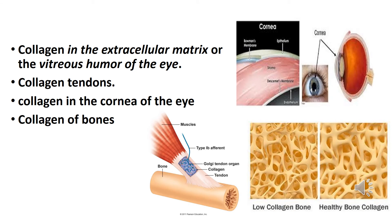Although collagen molecules are found throughout the body, their types and organization are dictated by the structural role collagen plays in a particular organ. In some tissues, collagen may be dispersed as a gel that gives support to the structure, as in the extracellular matrix or the vitreous humor of the eye. In other tissues, collagen may be bundled up in tight parallel fibers that provide great strength, as in the case of tendons.